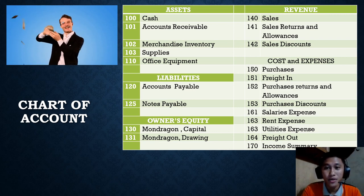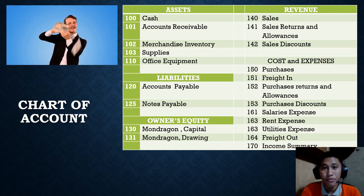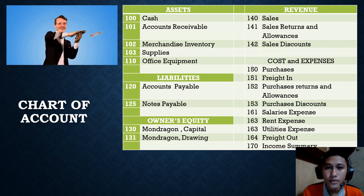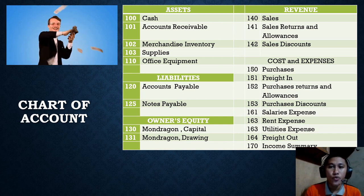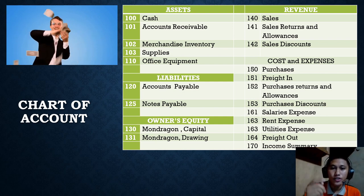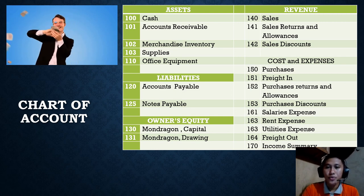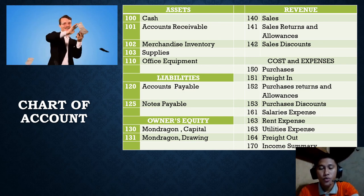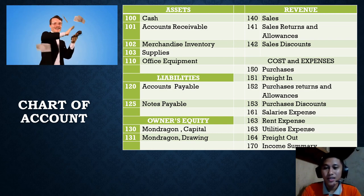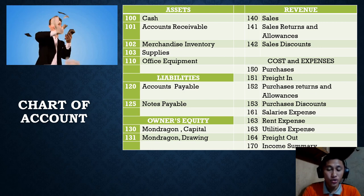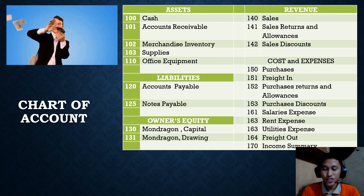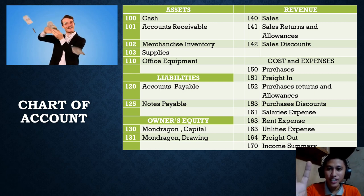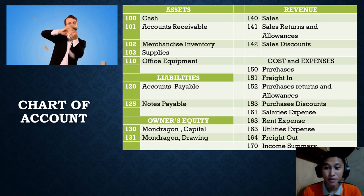This is the chart of accounts I mentioned. We have assets with accounts numbered 100s, liabilities 120s, owner's equity 130s, revenue and cost and expenses. These numbers are the codes or control numbers used in journal entries and in the ledger. This serves as your table of contents so you can identify where each account belongs.